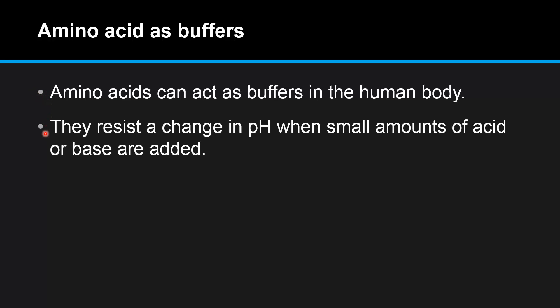Because amino acids are amphoteric that means they can act as buffers. So amino acids can act as buffers in the human body. They can resist the change in pH when small amounts of acid or base are added.